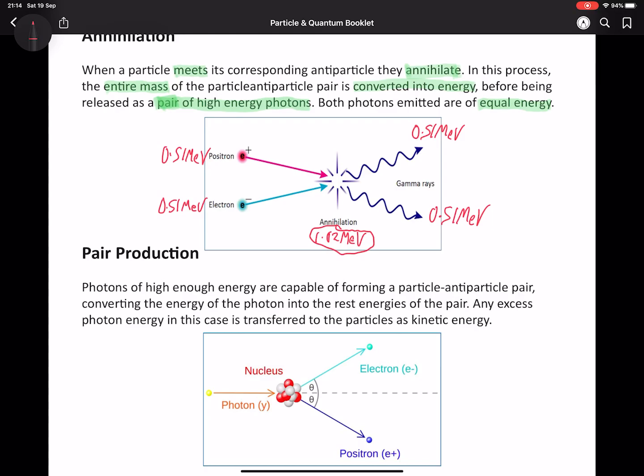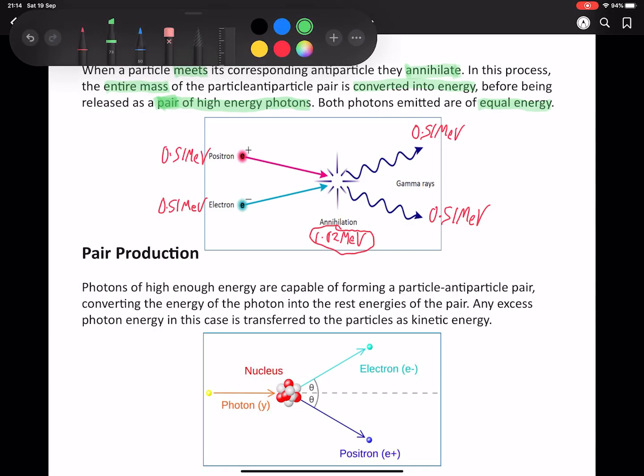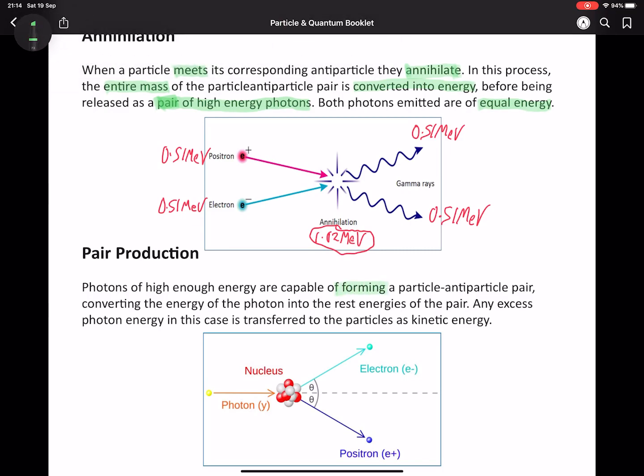Pair production is almost an inverse of this. In this case, we have a photon traveling along and it interacts with the nucleus. When it does so, the nucleus takes away some momentum and allows the photon to slow down and become a particle-antiparticle pair. So this is the effect that we witnessed with the cloud chamber.